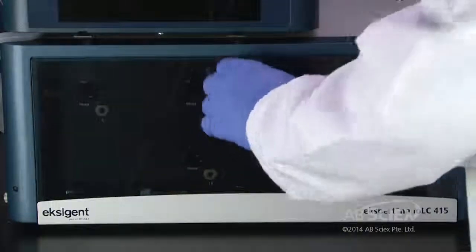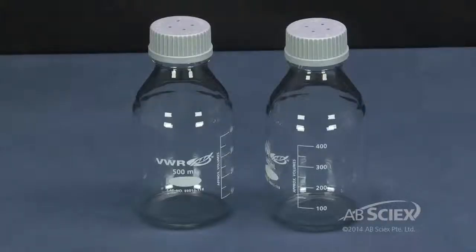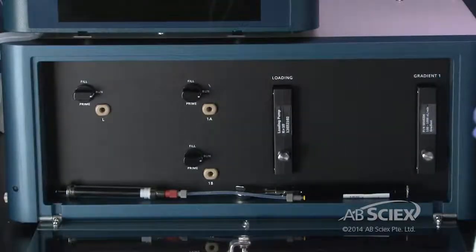Open the mobile phase cover. Identify the mobile phase position to be changed. Place the mobile phase inlet tubing for the appropriate channel into a bottle containing the desired mobile phase.